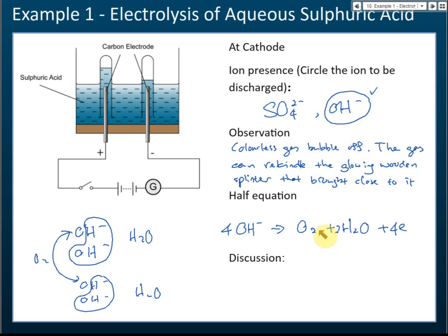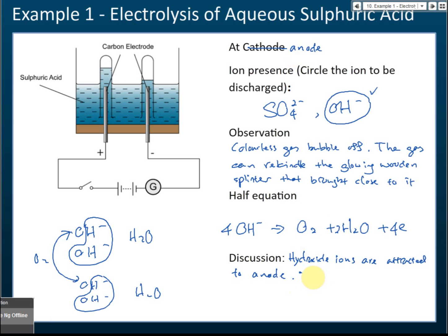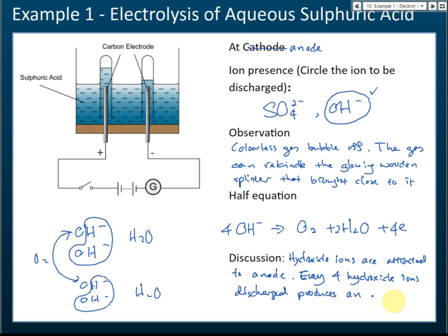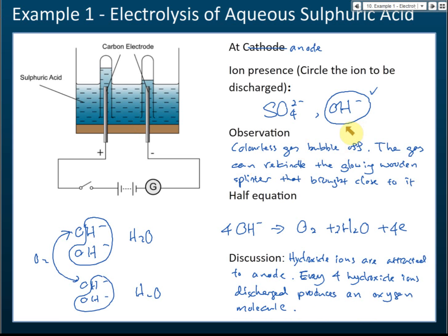For the discussion at the anode: hydroxide ions are attracted to the anode, the positive electrode, where they release electrons. Every four hydroxide ions discharged produce one oxygen molecule. This completes the ions present, observations, and half equations for the electrolysis of aqueous sulfuric acid.